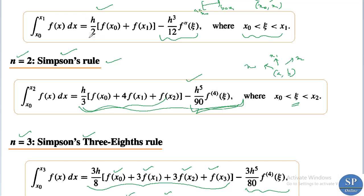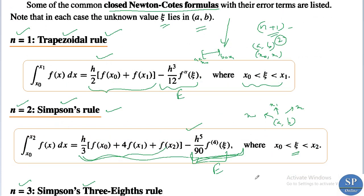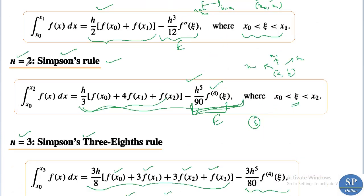When n = 1, we have the trapezoidal rule, approximately equal to this, and this is the error term. Checking the note: when n is even, the degree of precision is n+1. In this case n = 2 (even), the error term contains f^(4) — the fourth derivative — so the degree of precision is 3, which is n+1 = 2+1 = 3. This confirms the result.